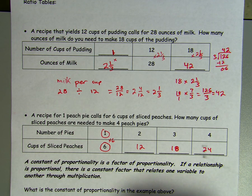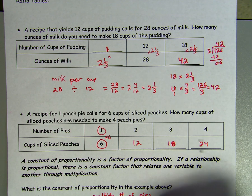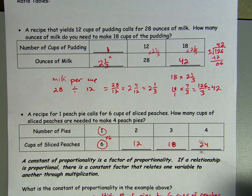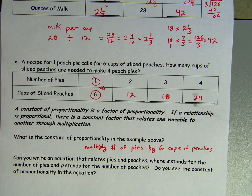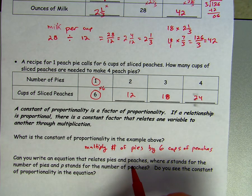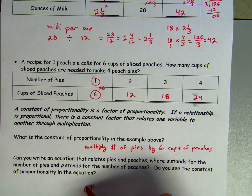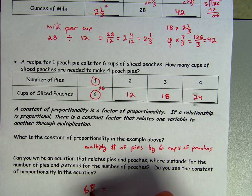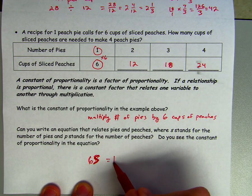The constant of proportionality is: multiply the number of pies by 6 cups of peaches. For the equation, where S stands for number of pies and P stands for number of peaches: 6 cups of sliced peaches for however many pies I have equals how many peaches total, so 6S equals P.